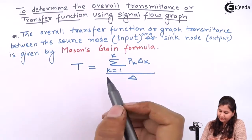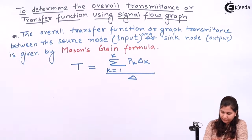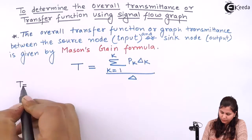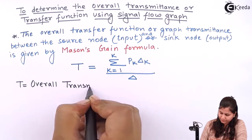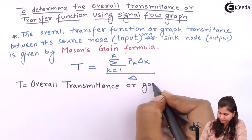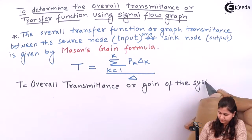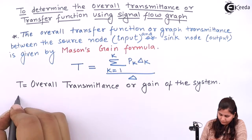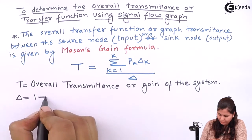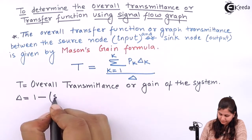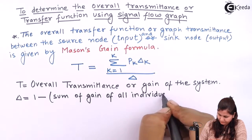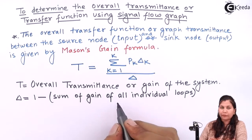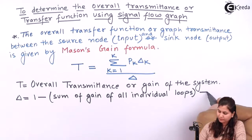So this is the formula. Let's see what these terms are: T, pk, and Δk. T is the overall transmittance or gain of the system. Δ is equal to 1 minus the sum of gains of all individual loops.